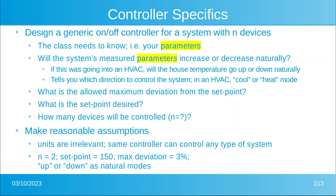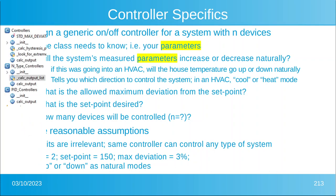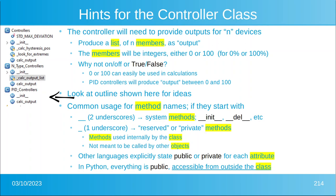The assumptions we're making: n equals 2, set point equals 150, max deviation 3 percent. The controller will provide outputs for n devices. We'll produce a list of n members where each member is an integer — either 0 or 100, equating to 0 or 100 percent. We use numbers rather than true/false or on/off because you can multiply a number like 0 or 100 and use it in calculations — for example, to produce a voltage for a relay.